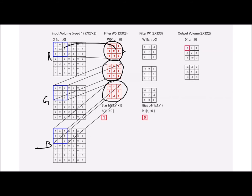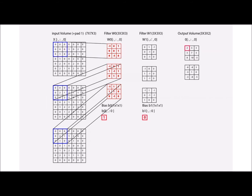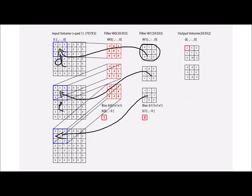In the animation: the filter's first channel multiplies with the red channel input, giving value a; the second channel gives value b; the third gives value c. Summing a + b + c gives 2. For the second filter, channels give values d, e, and f respectively. Adding d + e + f gives −8. So the output feature map volume is 3 by 3 by 2, with bias b0 = 1 and b1 = 0.